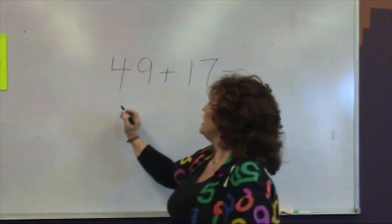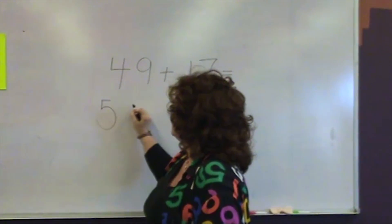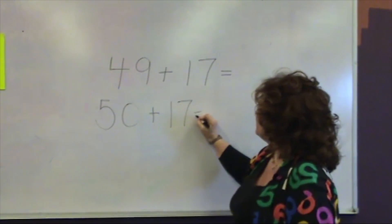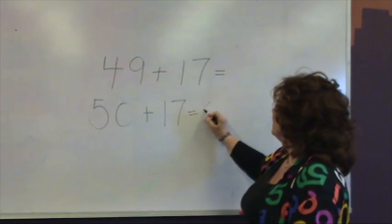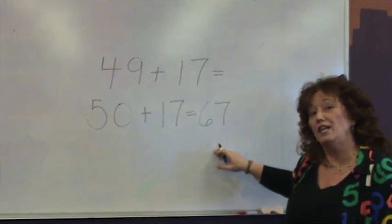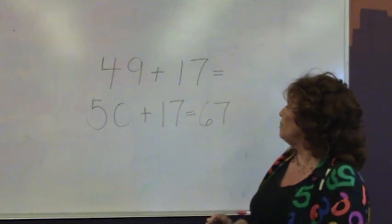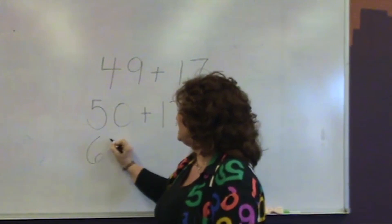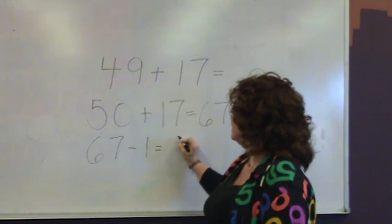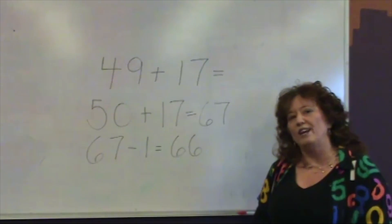When your children are talking to you and they're saying what they did, so for instance, someone says, well, Mrs. Esch, I did 50 plus 17. And I got 67. We're going to write the 67 right there. And notice that I write horizontally going across. Then, on the second step of the problem, when I say, well, then I did 67 take away 1 equals 66.